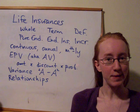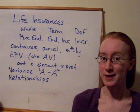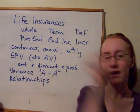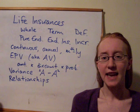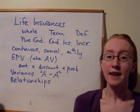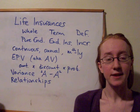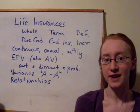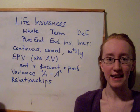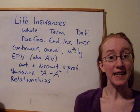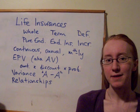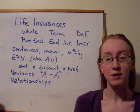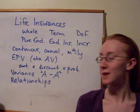If we want the variance — which the insurance company would definitely be interested in as a measure of the risk of the contract — we've developed a notation where we place a 2 above the A. This indicates that we're evaluating the same expression at a force of interest twice as high: delta becomes 2·delta, or equivalently v becomes v-squared. We artificially inflate the interest rate and recalculate, which gives us the second moment of the random variable. Then we subtract the square of the expected value to get the variance. The variance for any of these benefits follows that same form.